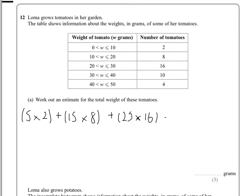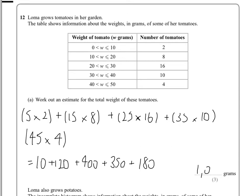Add that to 30 and 40, which is 35 times 10, and then finally 45 times 4. That gives us 10 plus 120 plus 400 plus 350 plus 180, and that gives us a total weight of 1060 grams.